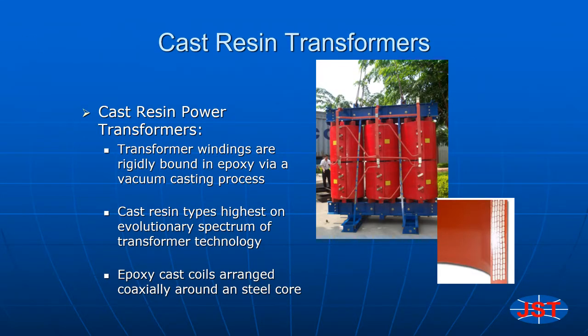Now I would like to shift our focus and specifically talk about cast resin transformers. Shown here is a core and coil assembly along with a cross section of the molded coil. As you see, the transformer windings are originally bound in epoxy resin. This core and coil assembly has both a high and low voltage coil for each phase. These coils are coaxially arranged around the steel core and both are vacuum cast.